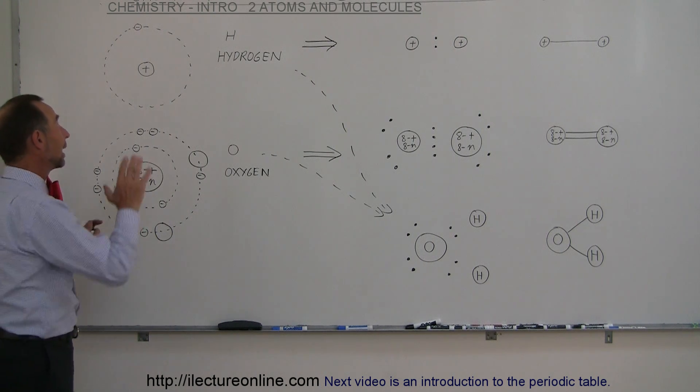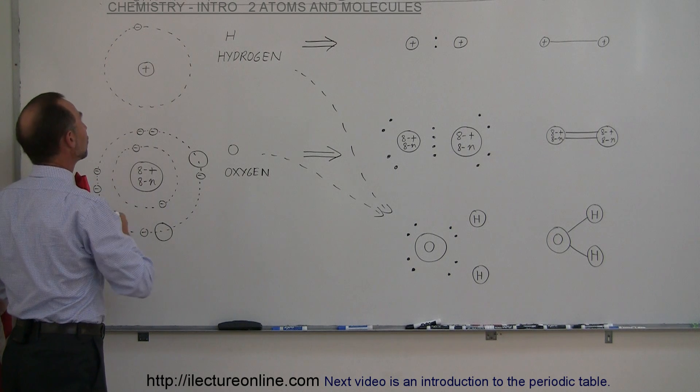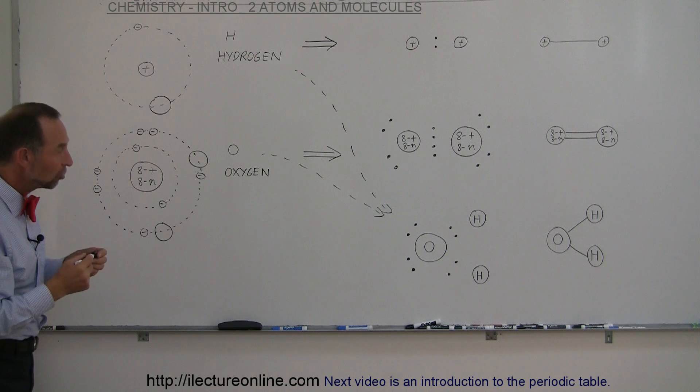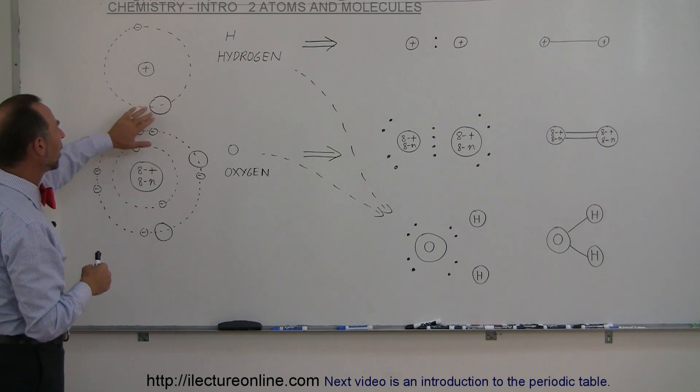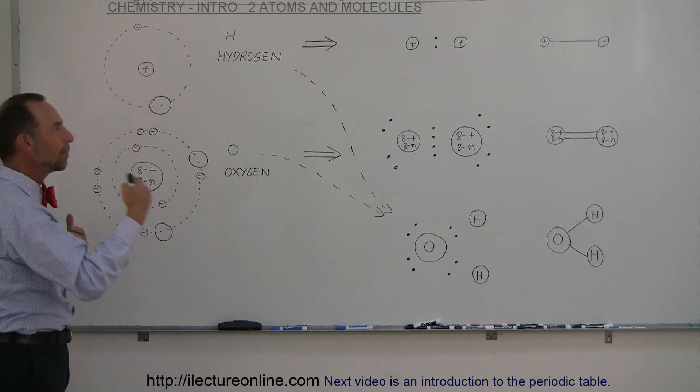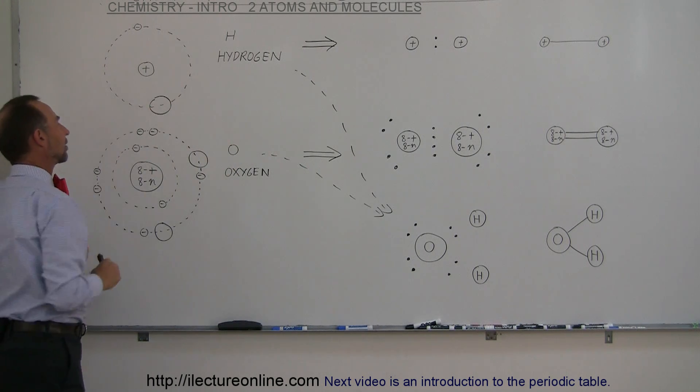Hydrogen only has one electron in its innermost energy level, which means hydrogen also has room for a second electron in that innermost energy level. What atoms tend to do is atoms like to fill up these empty spots.